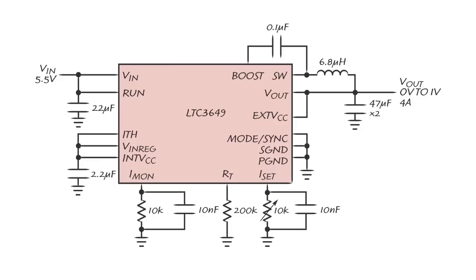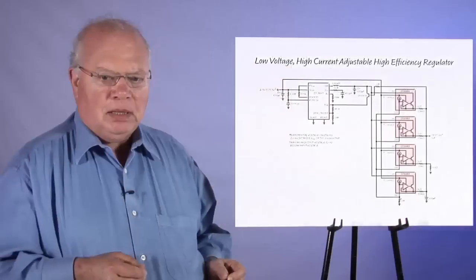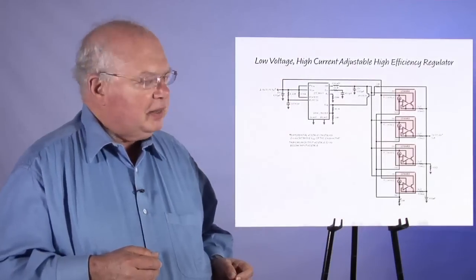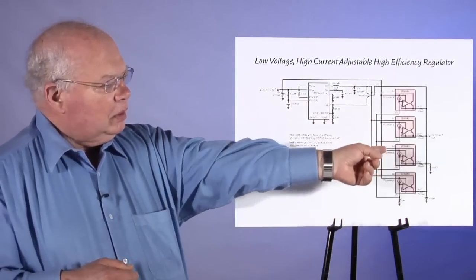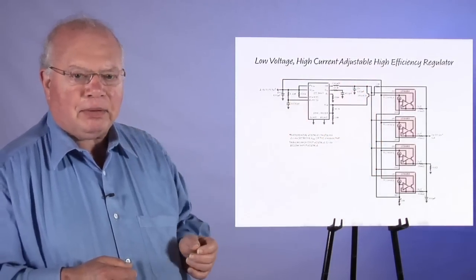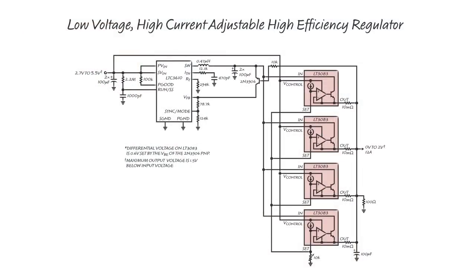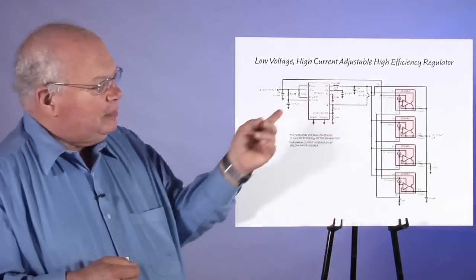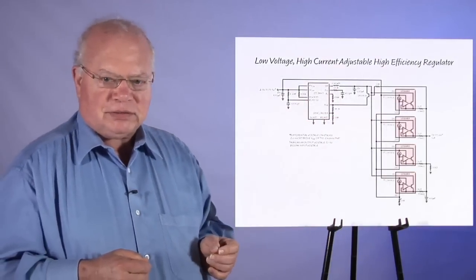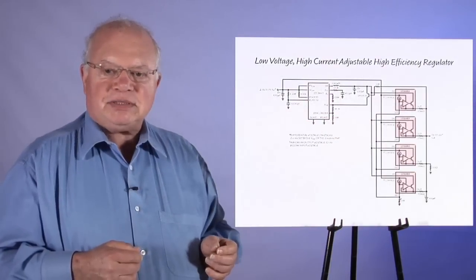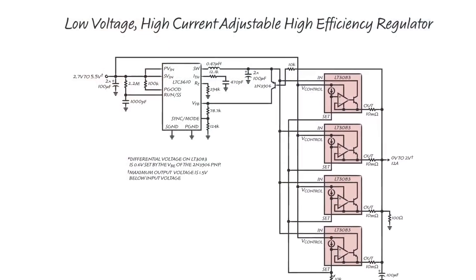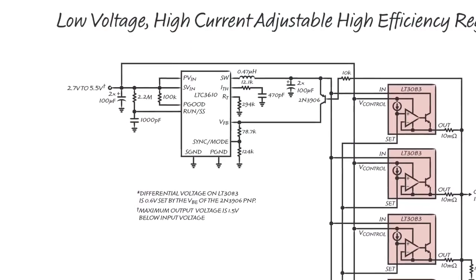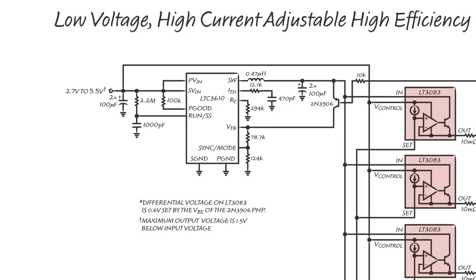If we need high current, we can use a circuit like this where we use four linear regulators in parallel to get 12 amps output. We have a tracking pre-regulator that keeps the voltage across the pass transistors at less than 0.6 volts. That way we have low power dissipation, we can go all the way down to zero, and we have very low ripple at the output.